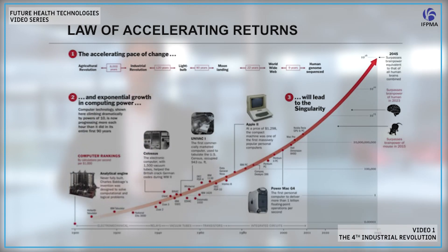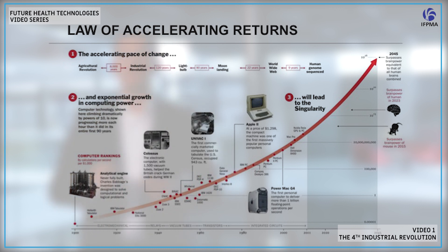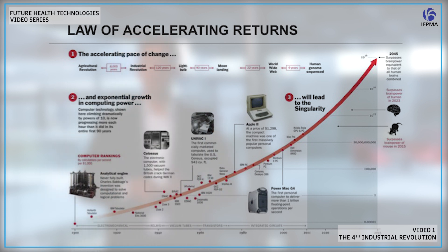If you look at the top of the graph, you'll see that between the agricultural revolution and the first industrial revolution, 8,000 years occurred. Between the first industrial revolution and the light bulb, about 120 years occurred. And between the light bulb and the moon landing, only 90 years occurred — interestingly showing us that the time frame between innovations is shrinking and shrinking, all the way to the most recent example of full human genome sequencing. Exponentiality is essential to understanding how technology evolves.